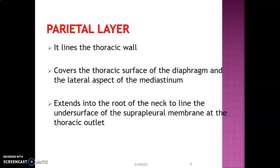The thoracic outlet is also called the thoracic inlet — it's an inlet because it allows the trachea and esophagus to bring things into the thoracic cavity, but it's also called the thoracic outlet because you have vessels carrying blood from the thoracic cavity to the head and neck region. The boundaries of the outlet are the manubrium anteriorly and the first ribs on the lateral aspect.